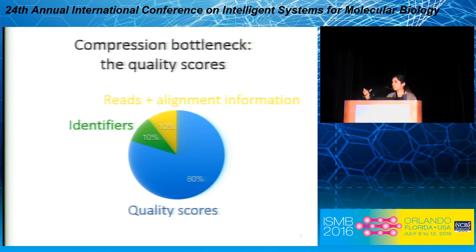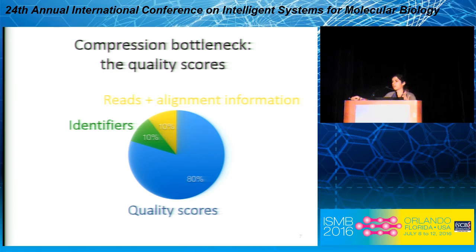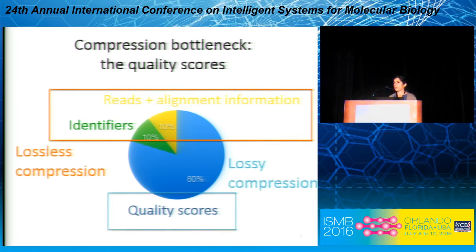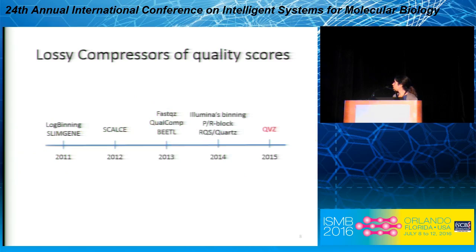This is actually good news, because what we really care about are the reads — those are the ones that contain the biological information. Quality scores are really an artifact of current sequencing technologies to account for sequencing errors. Therefore, research is going towards lossy compression of the reads and lossy compression of the quality scores. There has been a lot of research in recent years, and here I show some of the proposed algorithms in the literature.